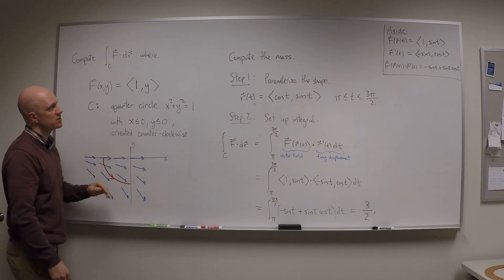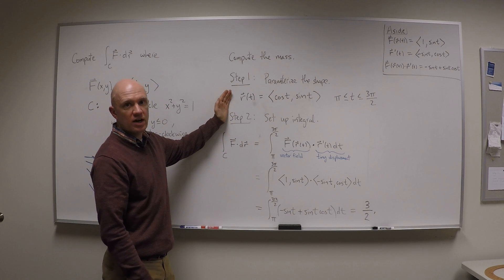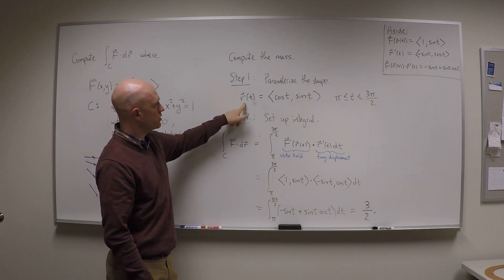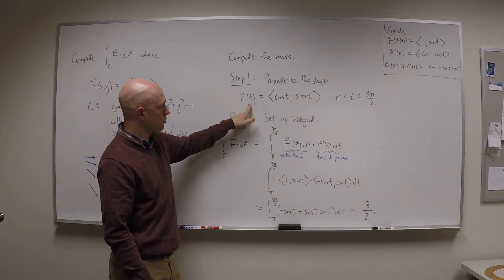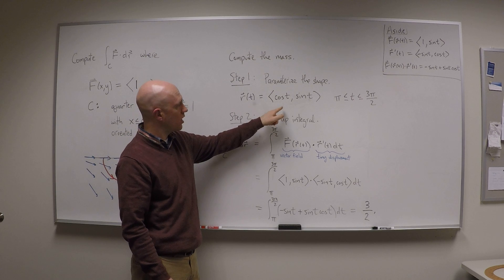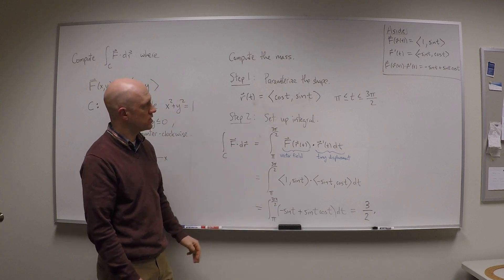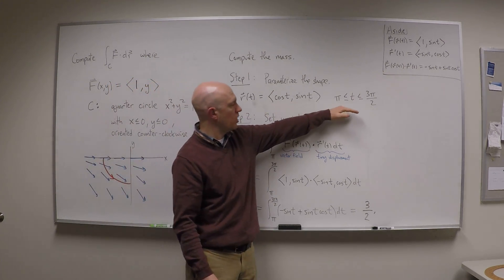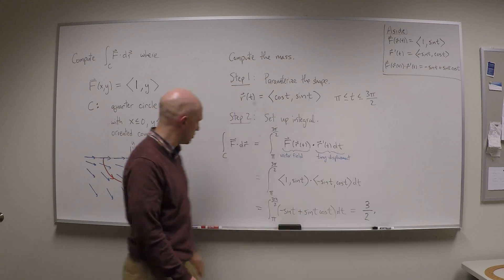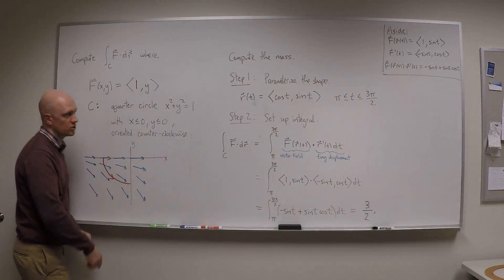So let's compute it. Step one, parameterize the curve. So the curve is a portion of a circle, it's a circle of radius one, and it's oriented counterclockwise. So I'm going to use cos t comma sine t to parameterize it. It's important to say that the parameter goes from pi to 3 pi over 2, because it's just this quarter of the circle there.